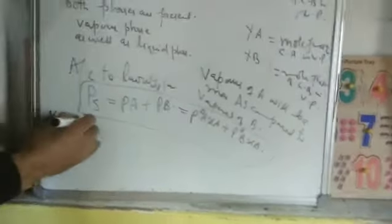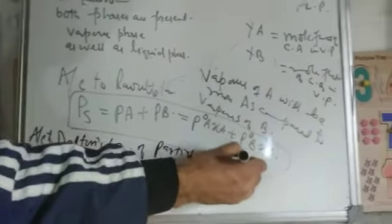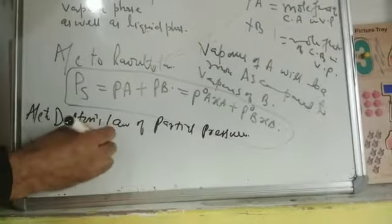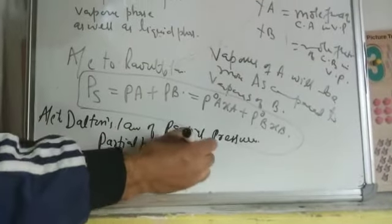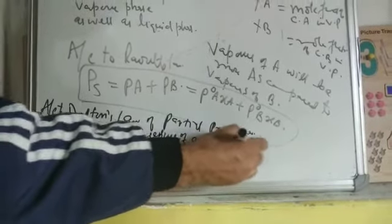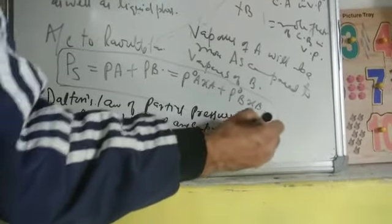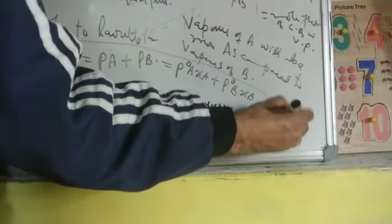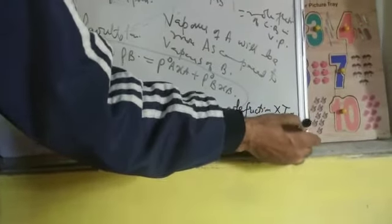According to Dalton's law of partial pressure, partial pressure of any component in the solution in vapor phase is equal to mole fraction of that component into total pressure of solution.